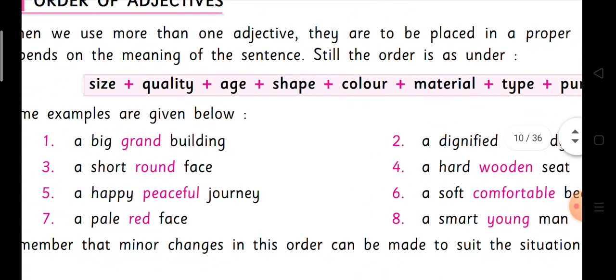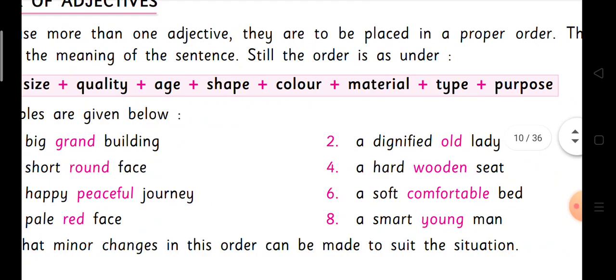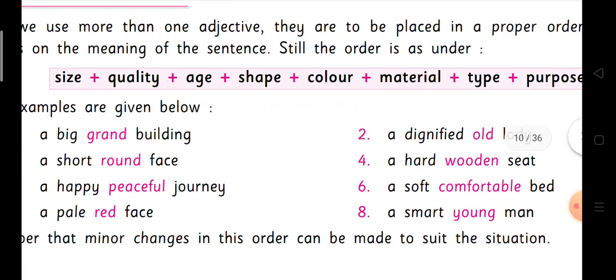Now see the examples given below. 'The big grand building' — big means size, and size comes first. We don't say 'grand big building,' that is wrong. Big is size, grand is quality. So: a big grand building. Second example: 'A short round face' — short is size and round is shape, so size comes before shape.